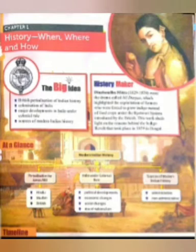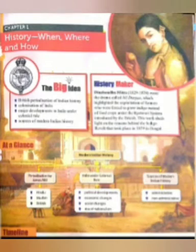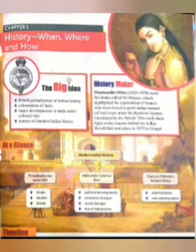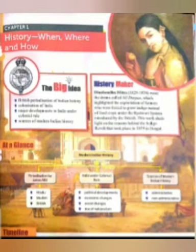Now let's see what we will read in this chapter. Modern Indian History — is chapter mein hum modern history ke baare mein read karayen ge: periodization by James Mill, jisme usne Hindu, Muslim aur British periods define kiye; India under colonial rule — political development, economic changes, social changes, rise of nationalism; aur sources of modern Indian history — administrative aur non-administrative dono.